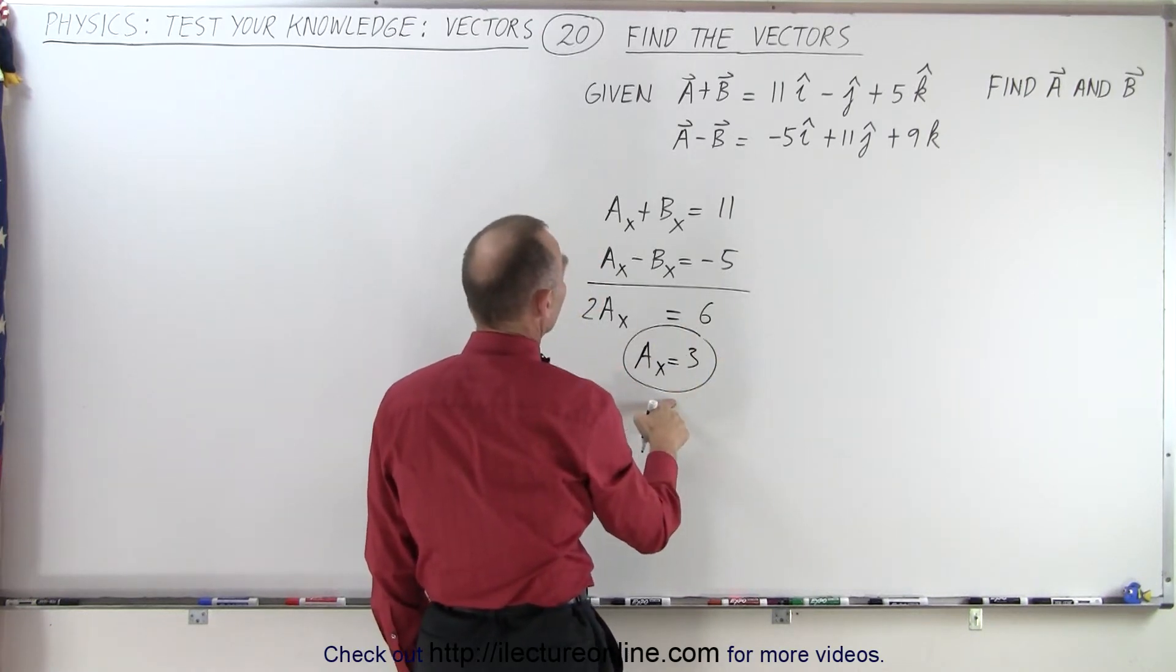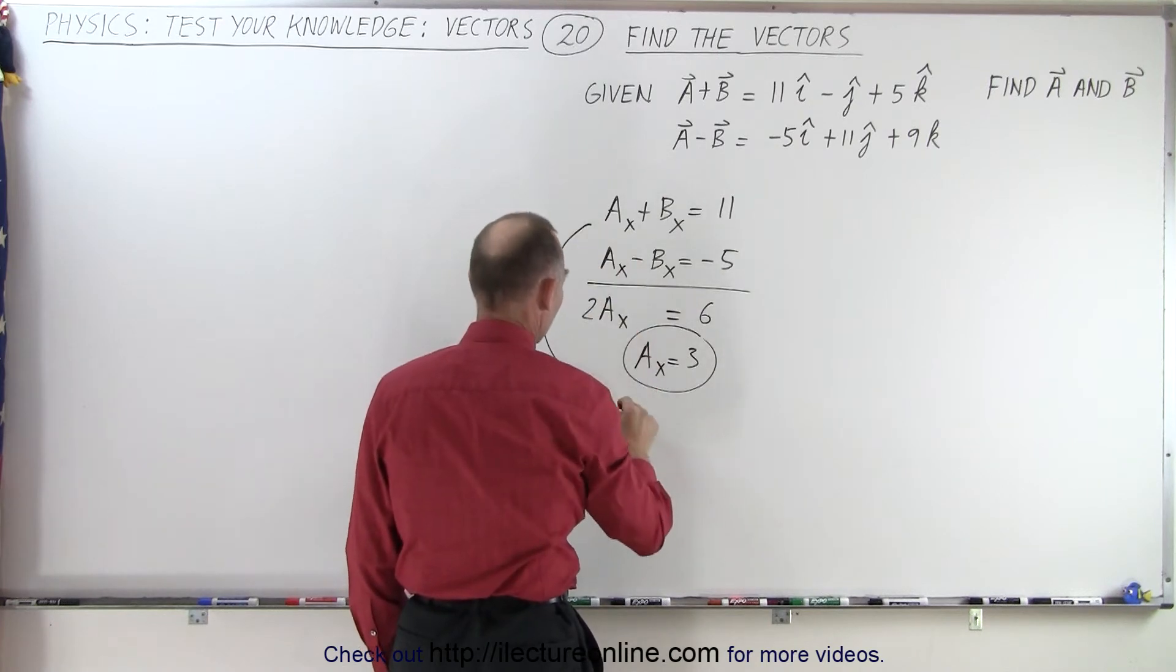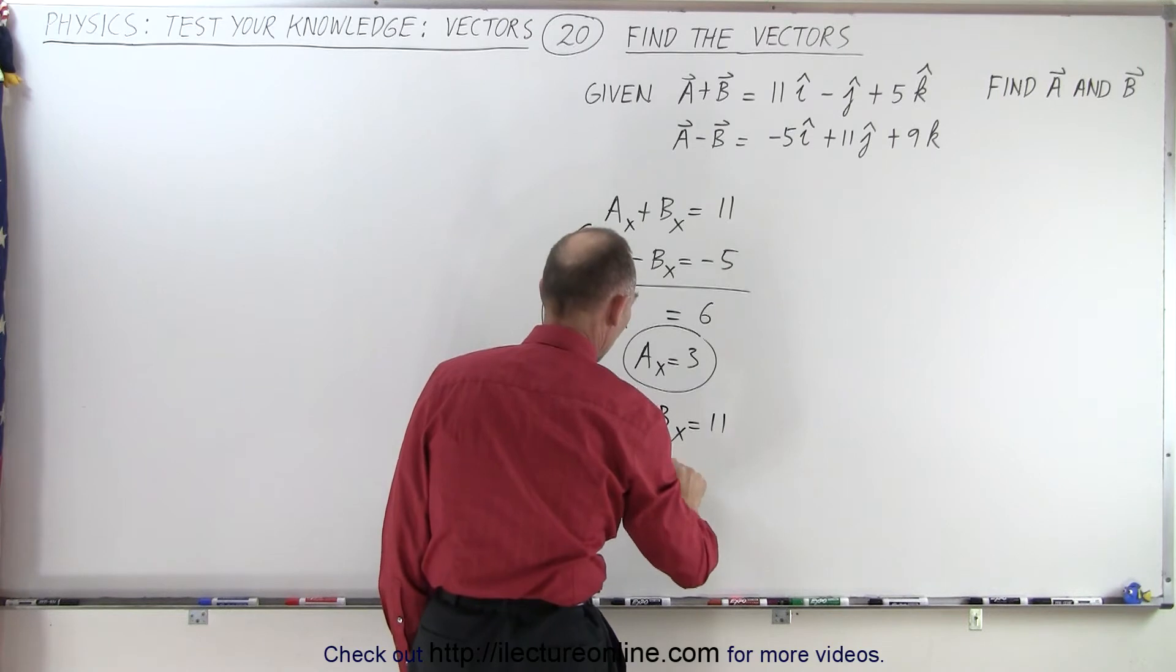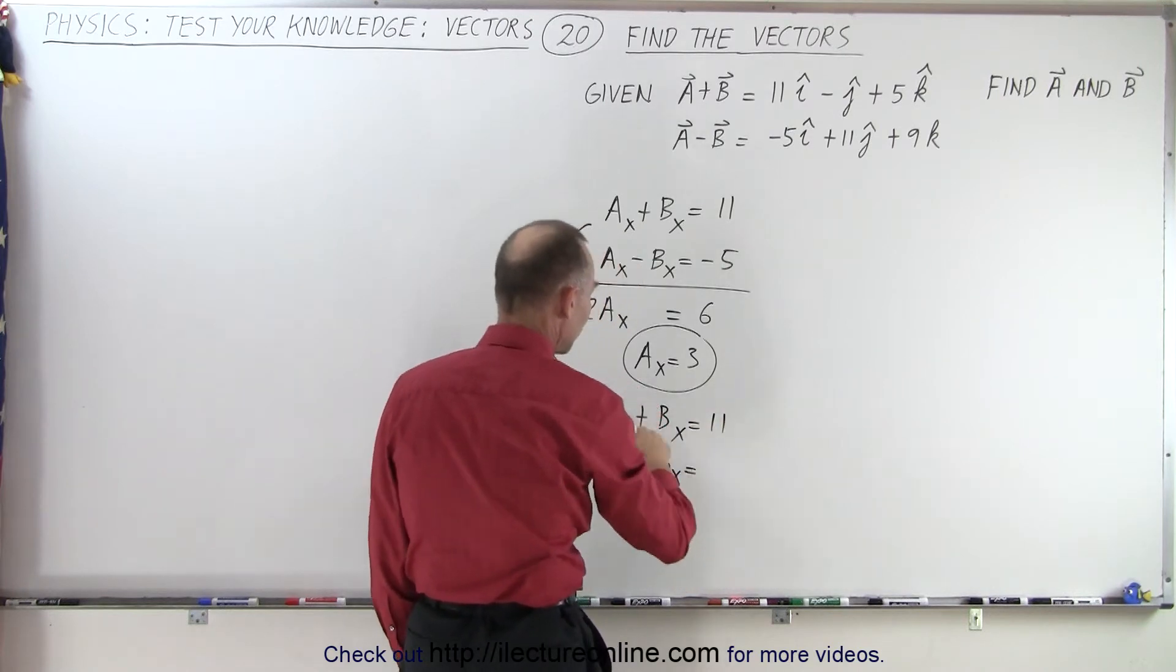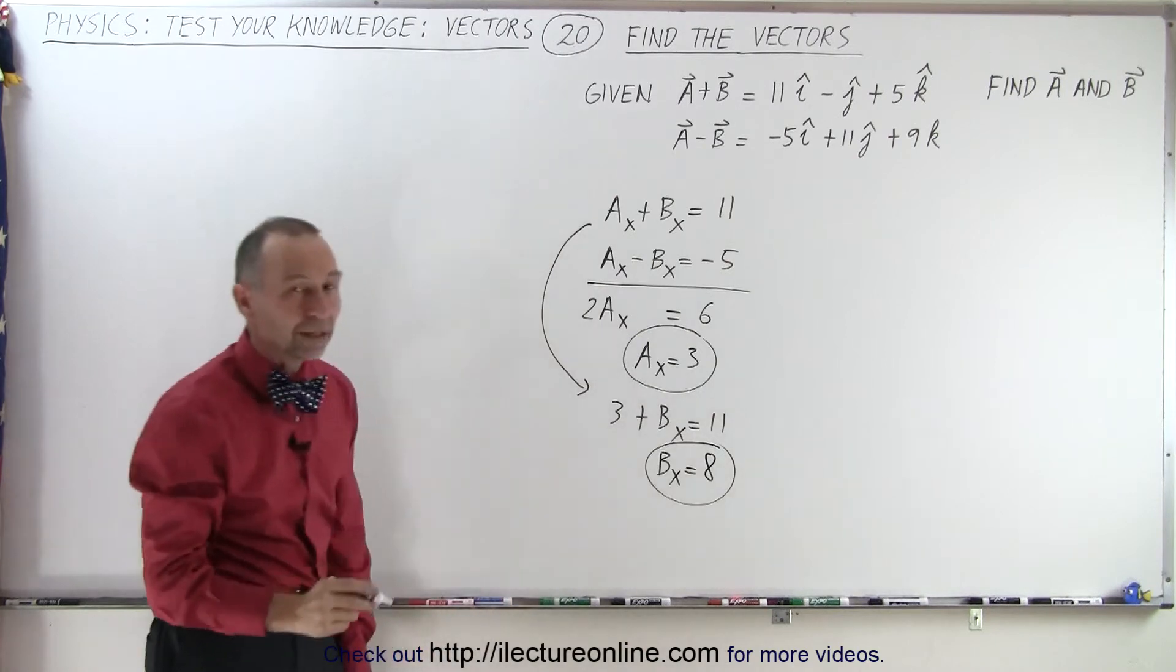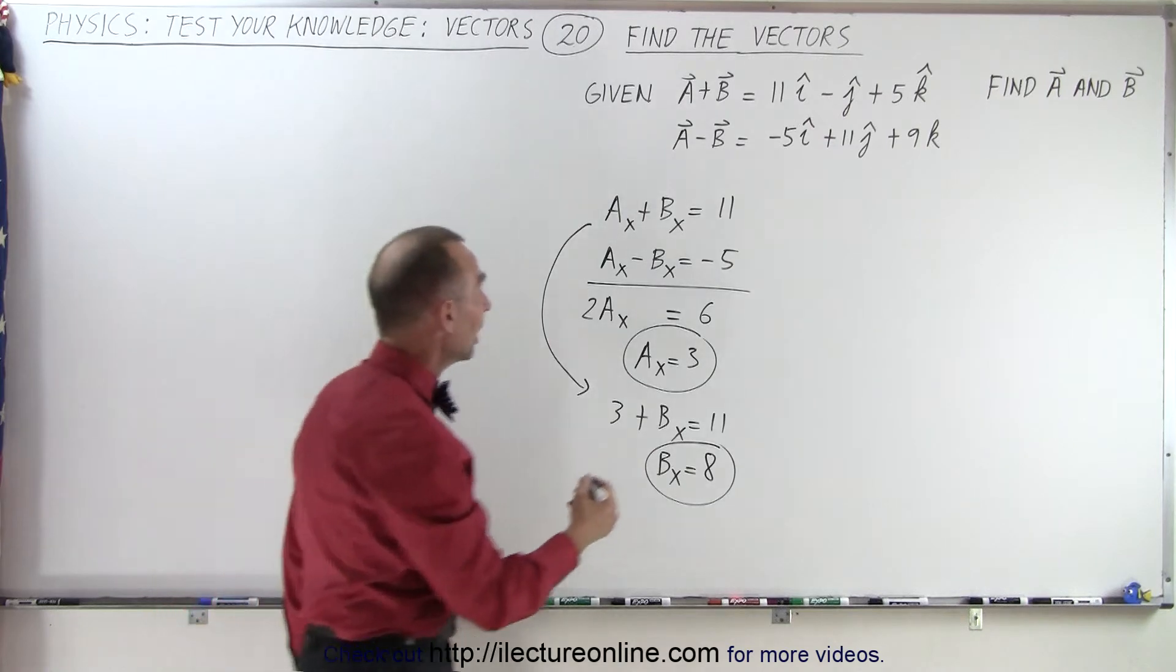Now if a sub x is equal to 3, and we plug that in here, we can then say that 3 plus b sub x is equal to 11, or b sub x is equal to 11 minus 3 which is equal to 8. Now we can do the same thing for the y component and the z components. So let's go ahead and do that.